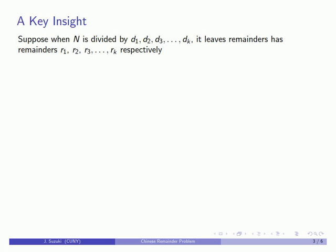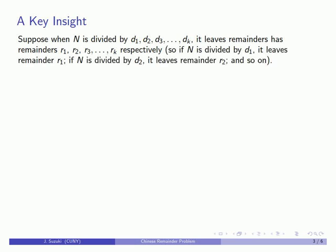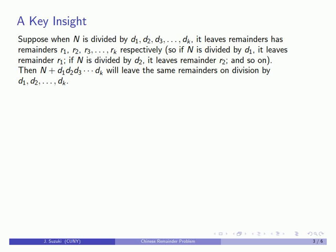The solution to the Chinese Remainder Problem is based on the following key insight. Suppose I have a number n and divisors d1, d2, d3, and so on. Suppose that when I divide n by each of these, I get remainders r1, r2, r3, and so on respectively. In other words, when I divide n by d1, I get remainder r1, when I divide n by d2, I get remainder r2, and so on. Now it turns out that if I take n plus the product of all of these divisors, then I'm going to get the same remainders as I had before.